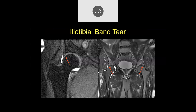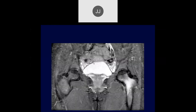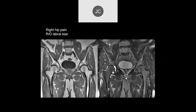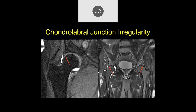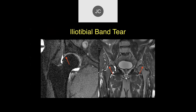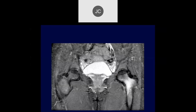Why did the patient have pain? On the PD fat-sat images there's actually a tear of the iliotibial band, which was the source of this patient's pain — not the labral appearance. So the labral finding was normal, but the iliotibial band tear was the actual diagnosis.